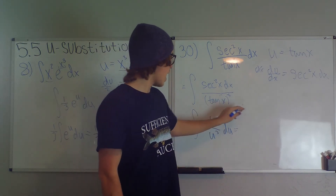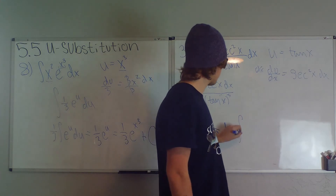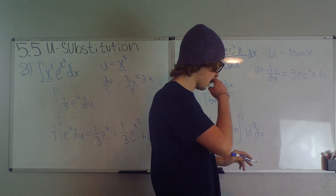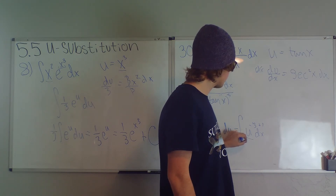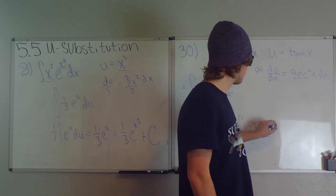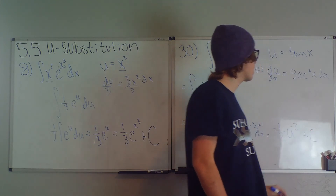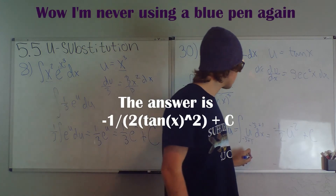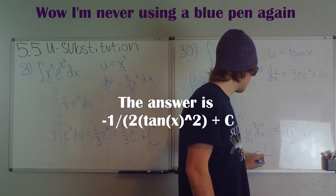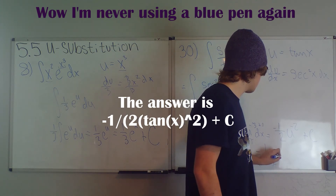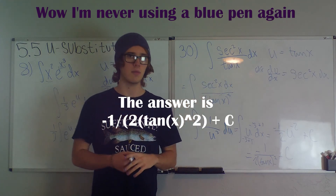This is just reverse power rule. We add 1 to the exponent and divide by negative 3 plus 1, giving us negative 1/2 · u to the negative 2 plus C. Plugging tangent back in, we get negative 1 over 2 tan²(x) plus C. That was a lot easier than trying to use trig identities.